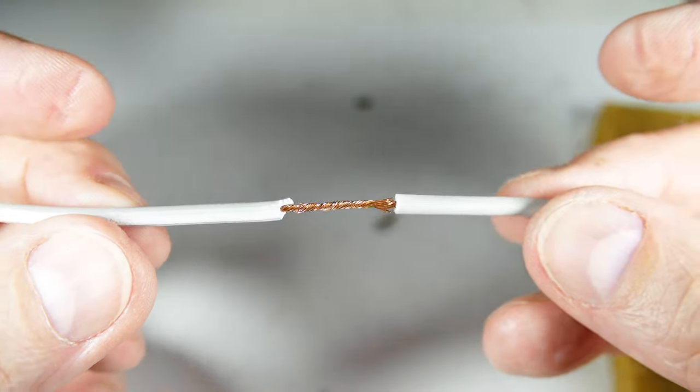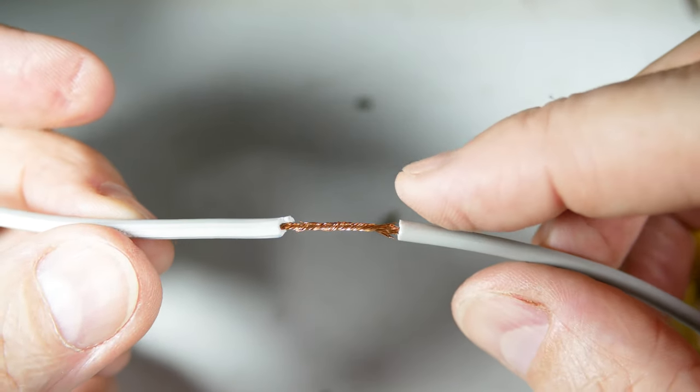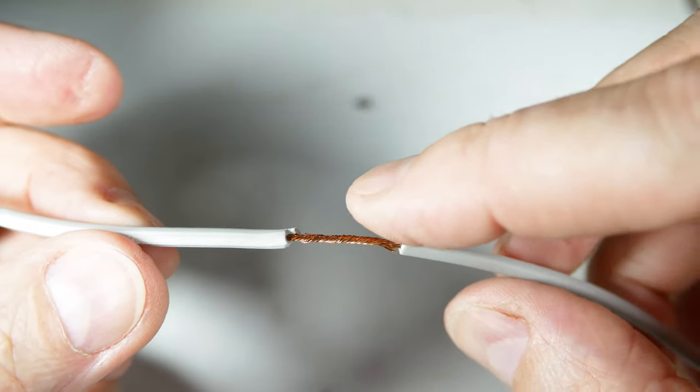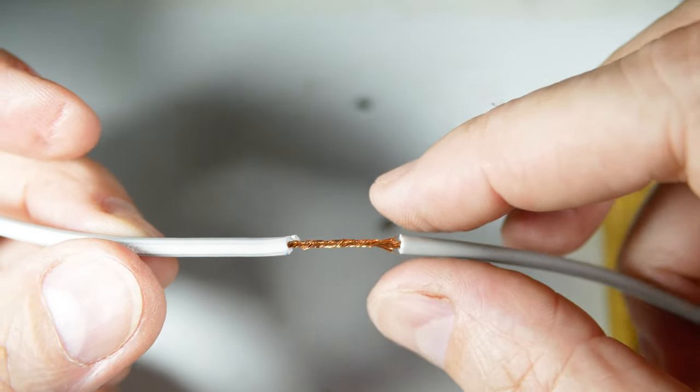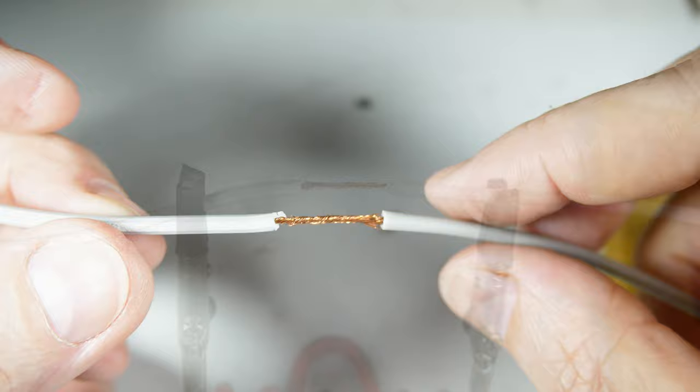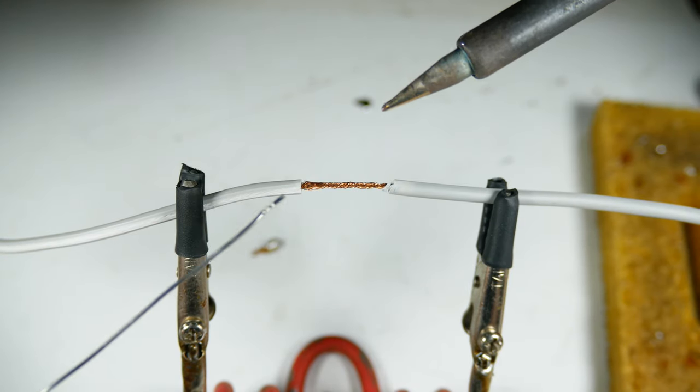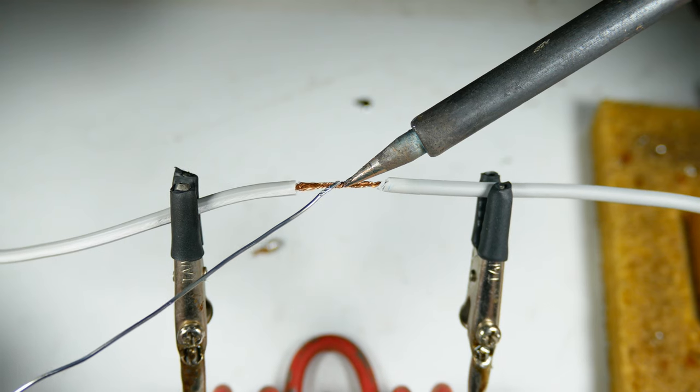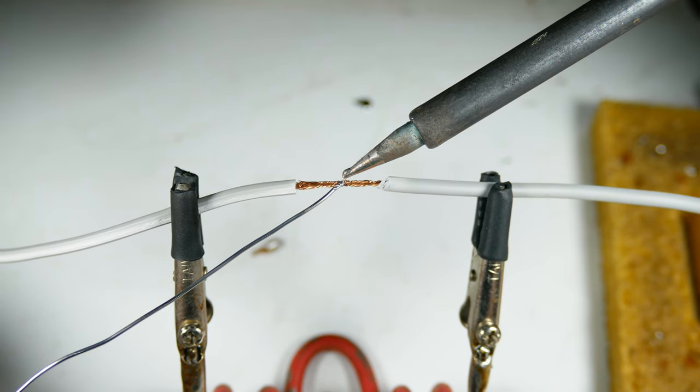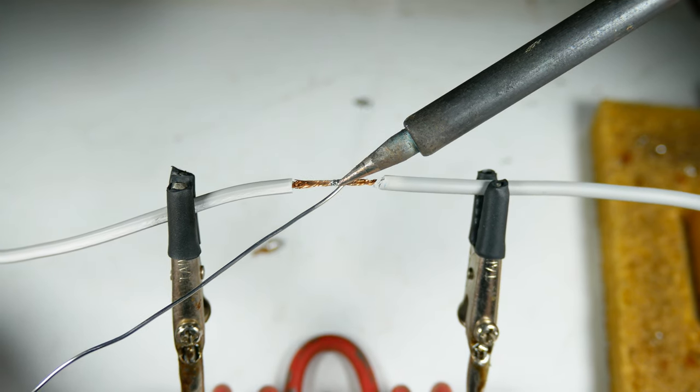So the nice thing about this joint is it's low profile and once it's soldered, you can tape it or shrink wrap it and it's nice and low. So I'm going to use a finer solder and a finer soldering gun because the wire is smaller.